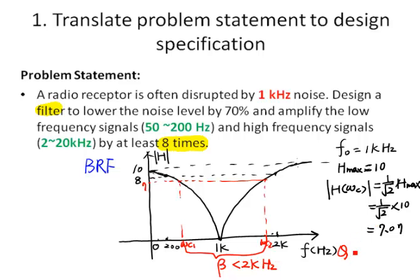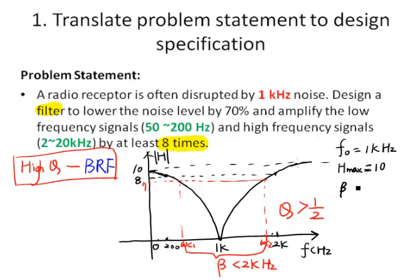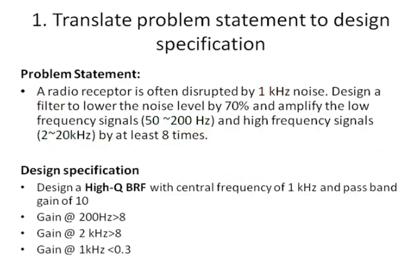The quality factor Q is defined as central frequency over bandwidth. The central frequency is 1 kHz and beta is less than 2 kHz, which means quality factor Q should be greater than 1 over 2. So this should be a high Q band reject filter because the quality factor is greater than half. We want to design a high Q band reject filter, so let's make beta equal to 500 Hz — making it a narrow band band reject filter.